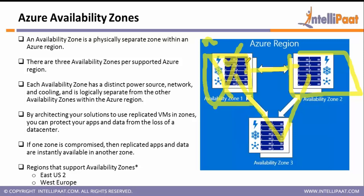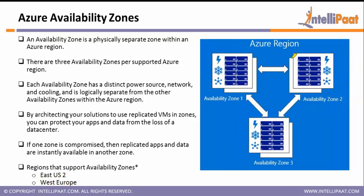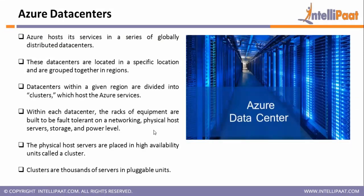So within this Mumbai region they have three data centers — one in north, one in south, one in east Mumbai — all connected to each other. If one goes down, you are still able to access your services because the other two data centers are up and running. These data centers are what we call availability zones. You can host your services in one availability zone, create a replica in zones two and three, so if one goes down you still access from the others. Remember, this is currently offered in only two regions — East US 2 and West Europe.